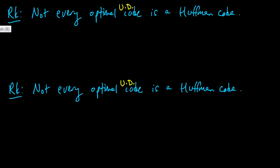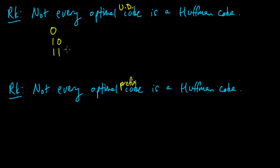Not every optimal prefix code is Huffman. Let me first give you an example. Take our little example code: 0, 10, 110, 111. We know this was optimal for these probabilities, and this is a prefix code.